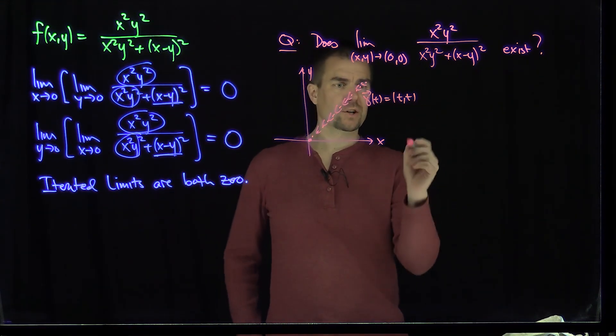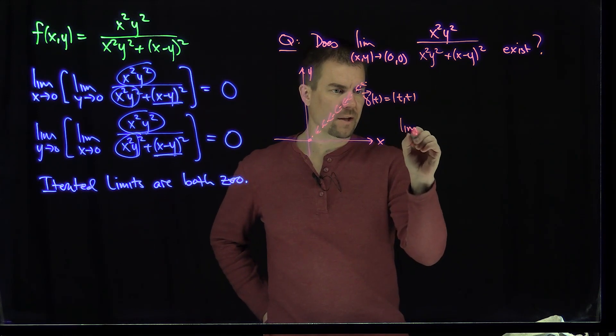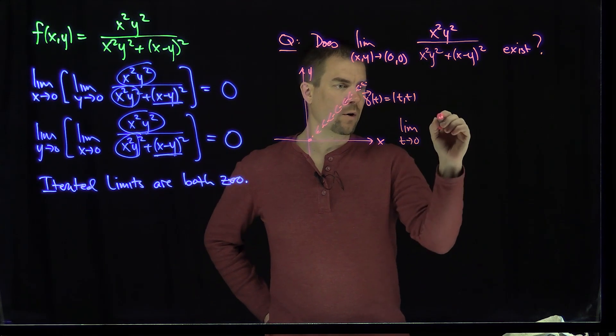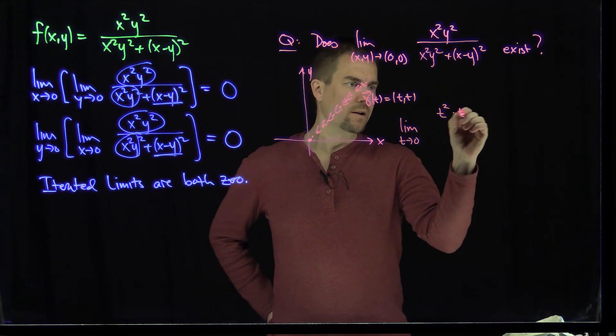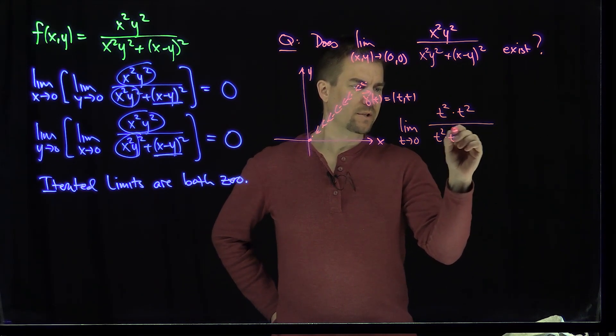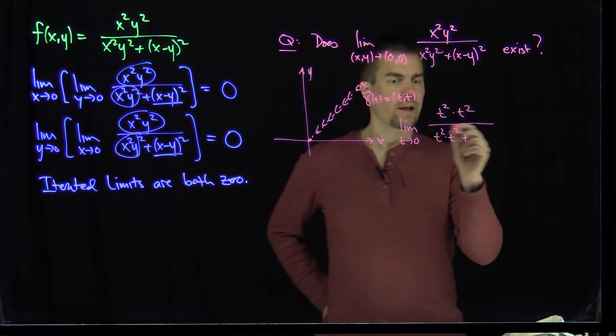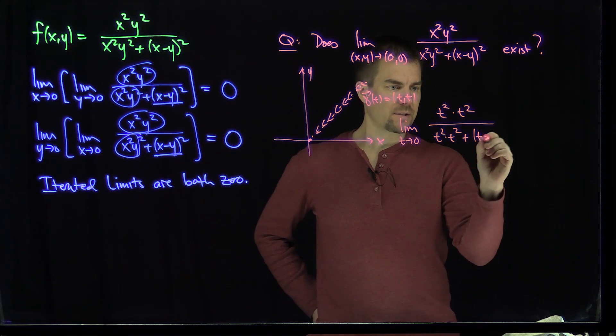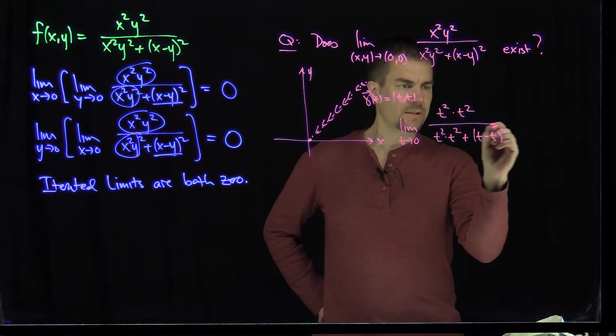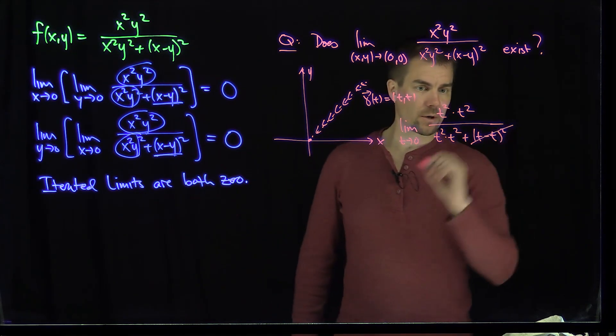So if we were to plug this trajectory in, I would have nothing more than just the limit as t approaches zero of t squared, t squared over t squared times t squared, plus a total of what? Well, I'll have a t minus t, quantity squared, and the t minus t is just identically equal to zero. So that's gone.